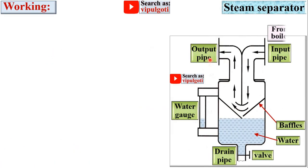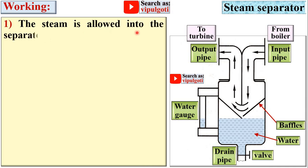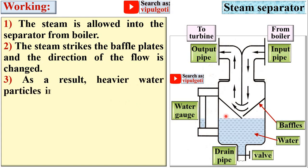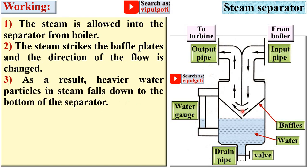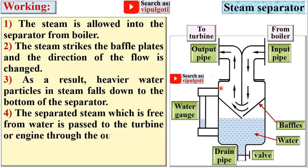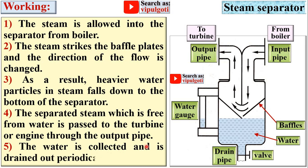Now the working of the steam separator. The steam is allowed into the separator from the boiler through this input pipe. The steam strikes the baffle plates and the direction of flow is changed. As a result, the heavier water particles in the steam fall down to the bottom of the separator. The separated steam, which is free from water, is passed to the turbine or engine through this output pipe. The water is collected and drained out periodically with the help of this valve.